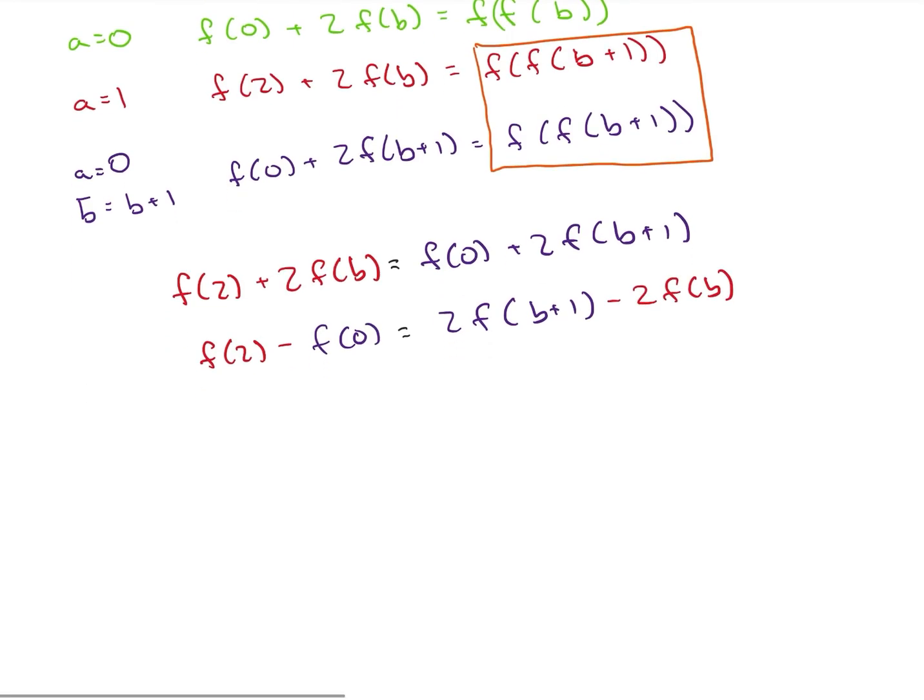And what I notice here, let's divide both sides by 2, and I'm going to get f of 2 minus f of 0 divided by 2 is equal to f of b plus 1 minus f of b. This is a pretty important stage. This number on the left, so I have my function evaluated at 2 and my function evaluated at 0 divided by 2, is going to be some constant value that's never going to change.